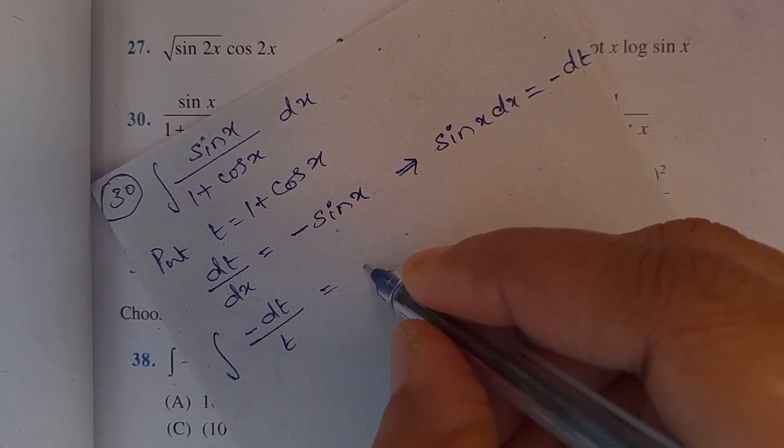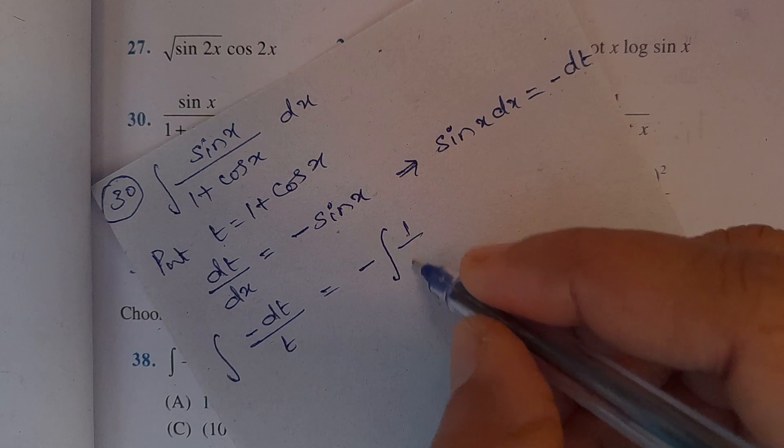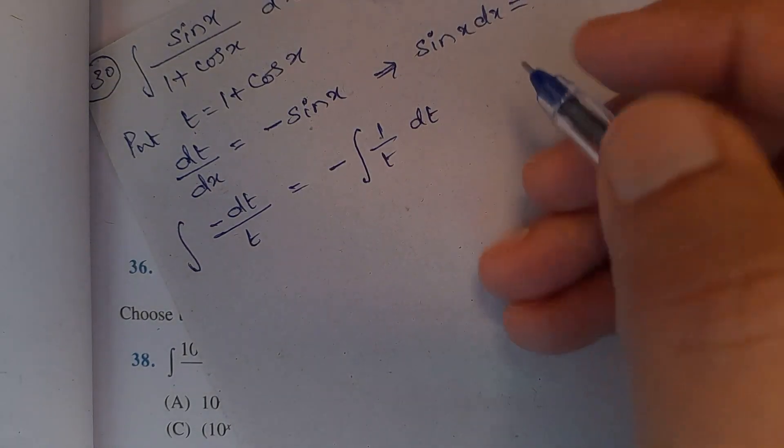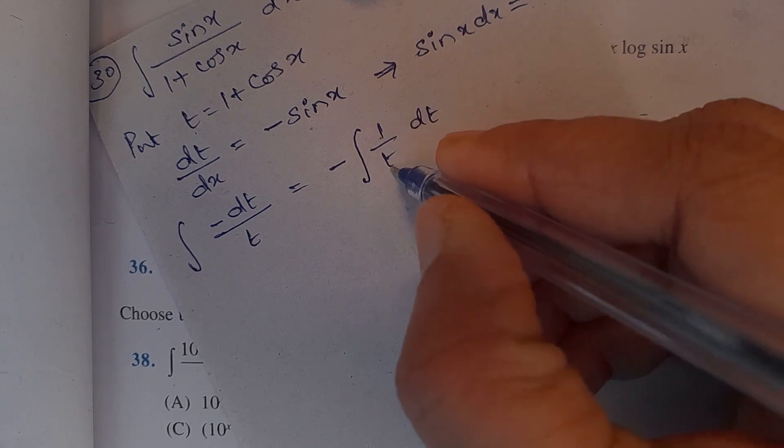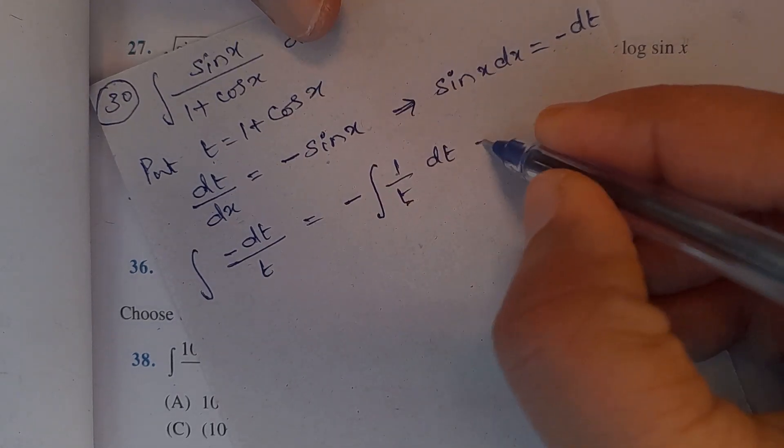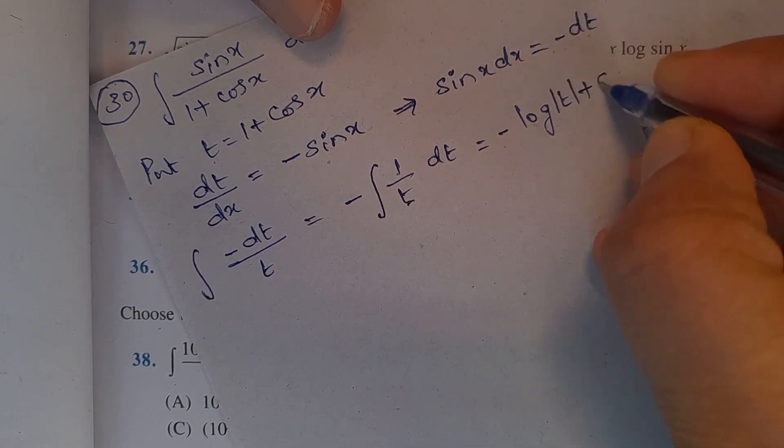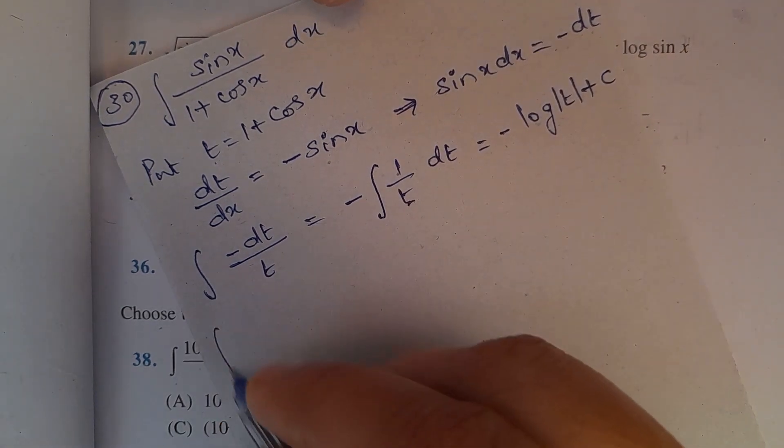Equal to minus integral of 1 by t into dt. Integral of 1 by t is log magnitude of t plus constant of integration.